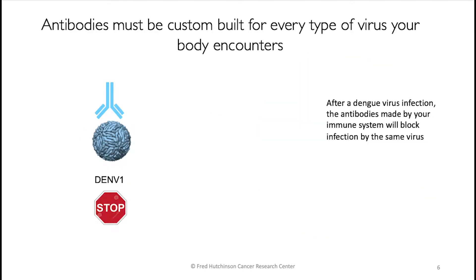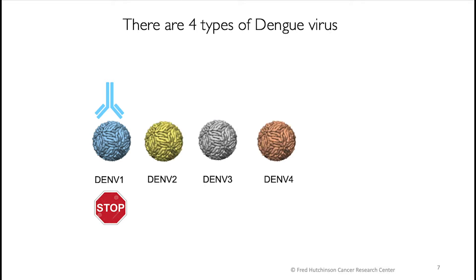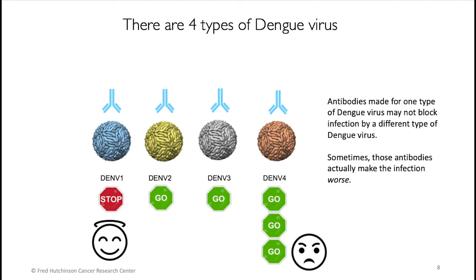Antibodies must be custom built for every type of virus your body encounters. After a dengue virus infection, the antibodies made by your immune system will block infection by the same virus. However, there are four types of dengue virus, and although in the vast majority of infections antibodies provide protection, the antibody response to dengue is complicated — they can make dengue disease worse in some cases, because you may not be protected from a different type of dengue virus.